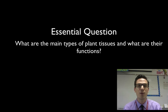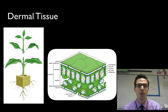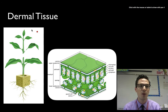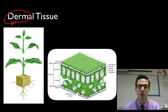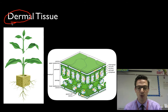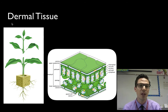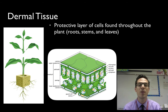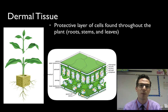We're going to start with our first tissue: dermal tissue. If you've ever seen the root of this word before — derm — you might have seen it if you go to the dermatologist, or you know that you have an epidermis, which is your skin. Just like we have dermal tissue or an epidermis, plants also have dermal tissue covering the outside of the plant for exactly the same function — it's a protective layer of cells separating the inside of the plant from the outside.